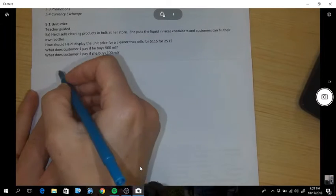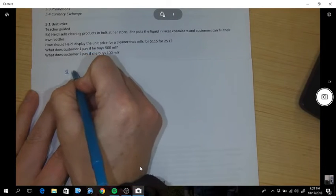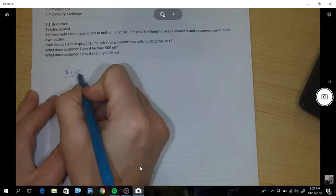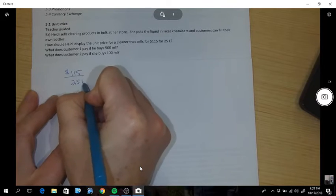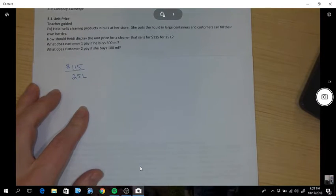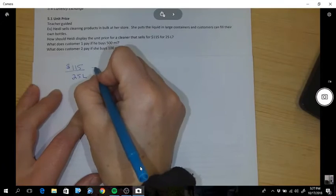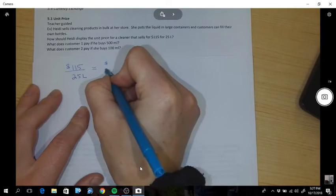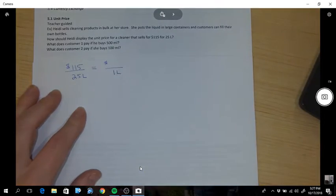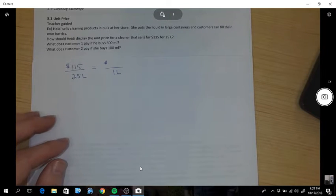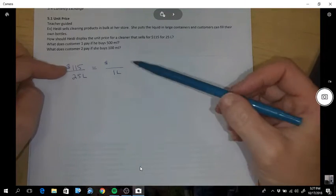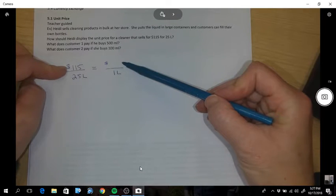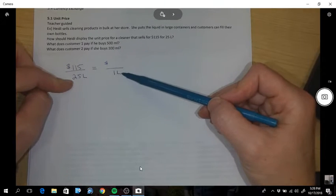Okay, so we could go $115 over 25 liters. We want to know the unit price, so we're going to do the price per one liter. Ratios are like t-shirts and pants. If your price is your t-shirts, your price has to be your t-shirts on this side and your liters pants, your liters pants.